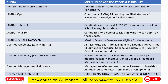Coming on to Deemed Universities — in deemed universities we have Jain Minority, Muslim Minority, Management seats, and NRI seats. For Jain Minority, there are two colleges — one medical and one dental, both based in Vadodara. The medical college is Sumandeep Medical College Vadodara and the dental college is KM Shah Dental College Vadodara. These are exclusively reserved for Jain minority students — candidates who belong to the Jain community.